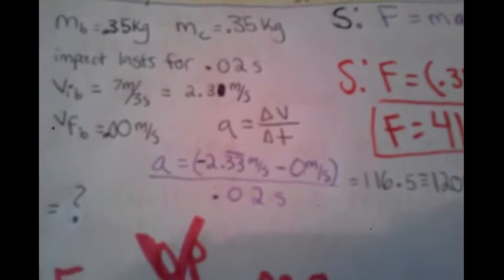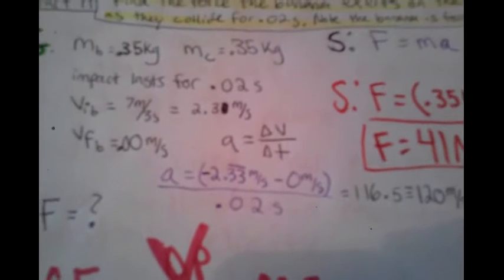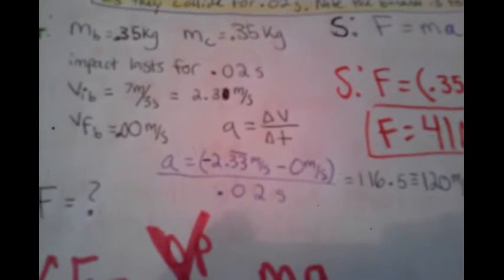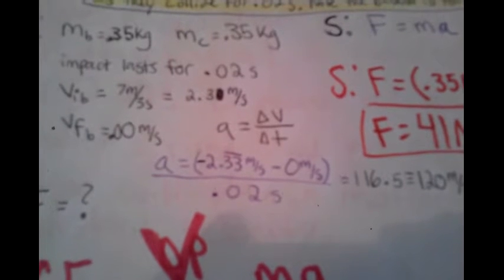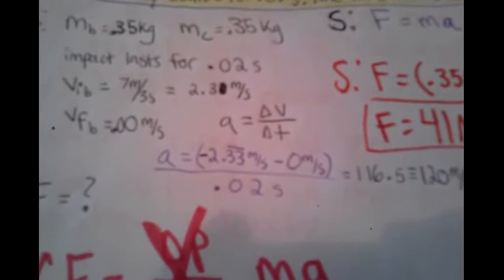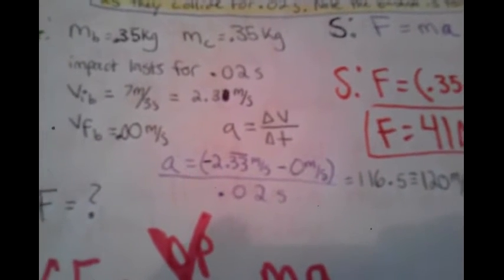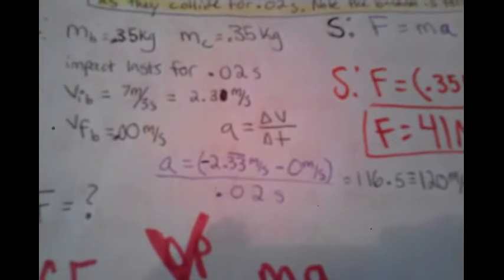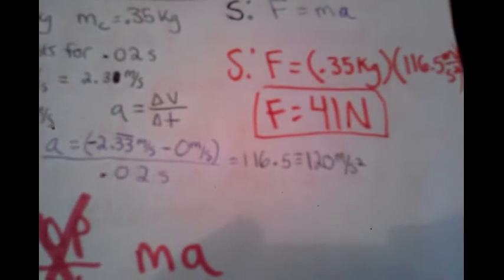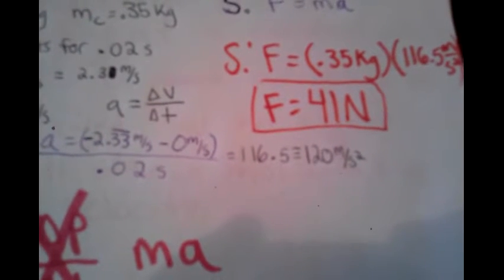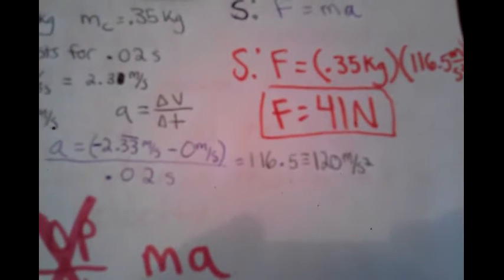The acceleration of the banana during the collision can be seen as negative 2.33 meters per second minus 0 meters per second, over 0.02 seconds — the initial velocity minus the final velocity over the change in time. This gives us negative 116.5 meters per second squared.